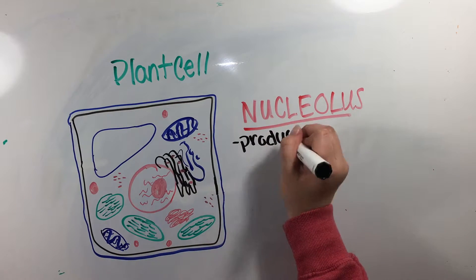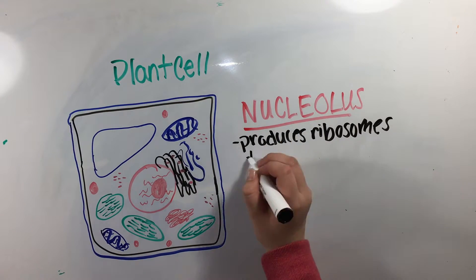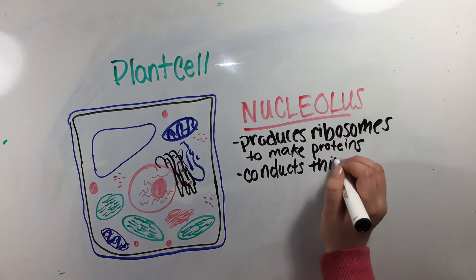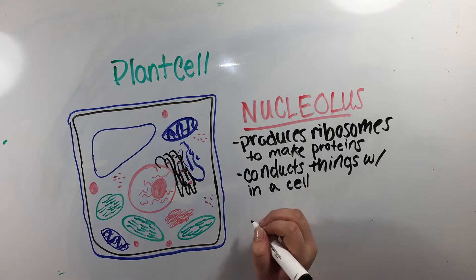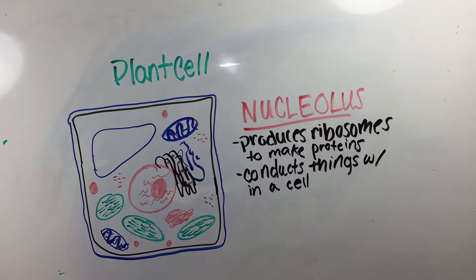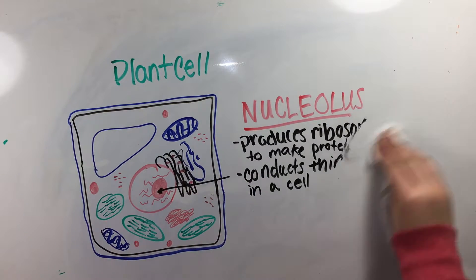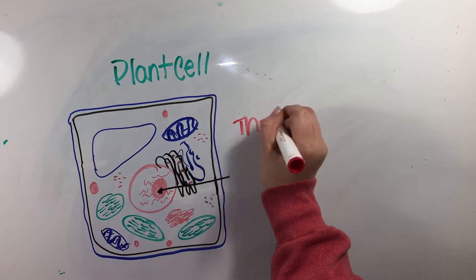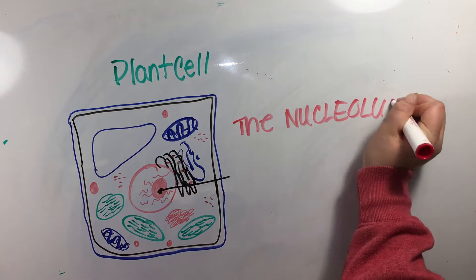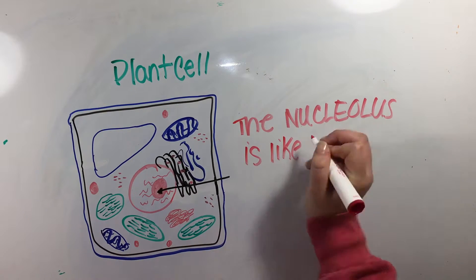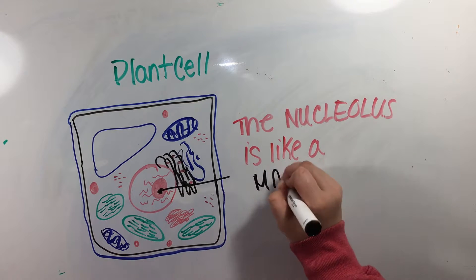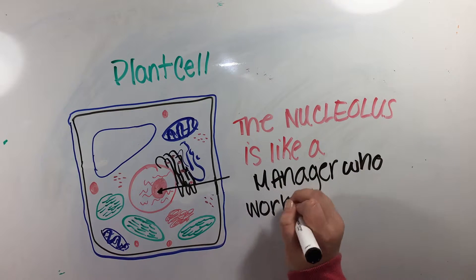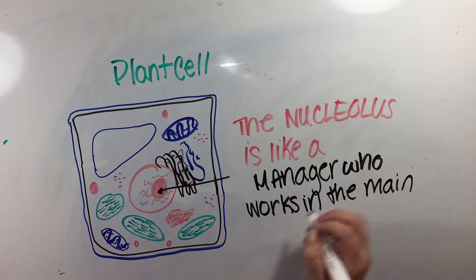The nucleolus is within the nucleus, produces ribosomes which assemble proteins, and conducts things within the cell. The manager of the main office of the zoo is like the nucleolus, since it conducts and instructs people where they want to go, helps people find snack stands where proteins are, and more information one is looking to obtain at the zoo.